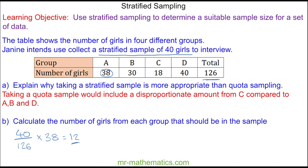In group B we will use the same proportion, which is 40 out of 126, of the number of people in group B, which is 30. And this is 10 people. For group C we will sample 6 people, and for group D we will sample 13 people.